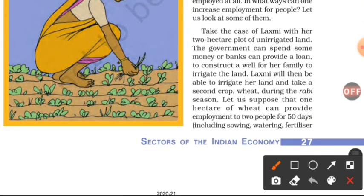Let us look at some examples. Take the case of Lakshmi, who has a two-hectare plot of unirrigated land — meaning there are no irrigation facilities on her land.